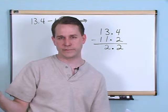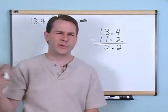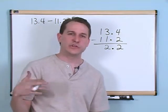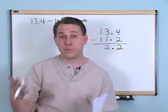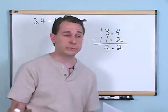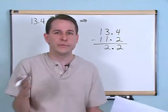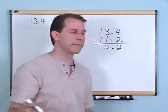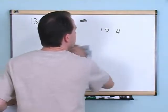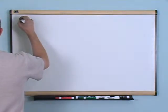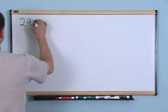3 minus 1 gives me 2, and 1 minus 1 gives you 0 — but you don't need to write that because it's a leading zero. Then take your decimals and drag it down, putting it between the two numbers. 2.2 is the answer. And this makes sense because 13.4 is around 13 and 11.2 is around 11, so 13 minus 11 is 2 — and the answer is 2.2, just a little bit more than 2.